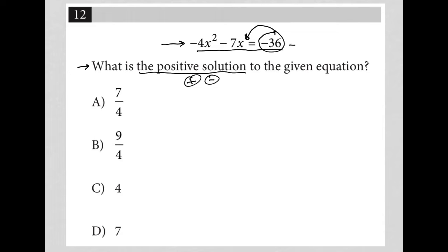So I'm going to do that to start off with. I'll have negative 4x squared minus 7x plus 36 equals zero. We add 36 to both sides to get that to equal zero on the right hand side.